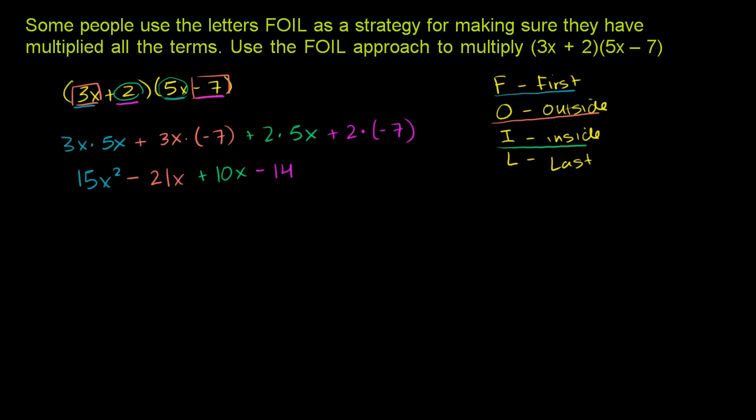And we can add these two middle terms together. If we have negative 21x and then we add 10x to that, that gives us negative 11x. So this right here is negative 11x. We have 15x² - 11x - 14.